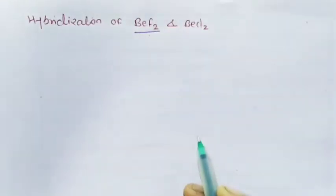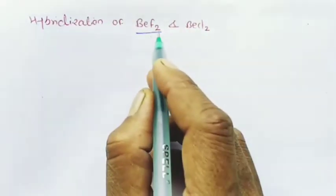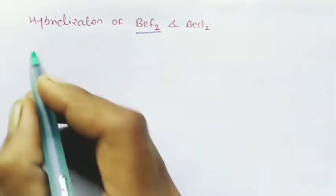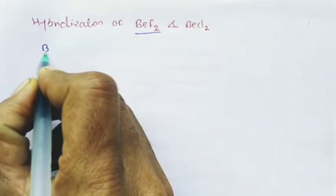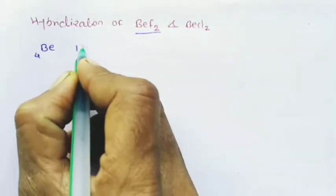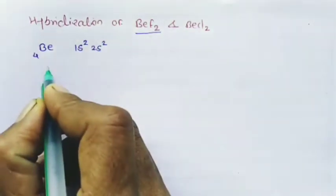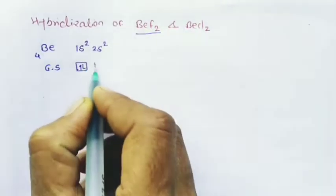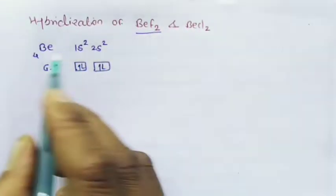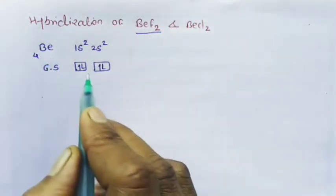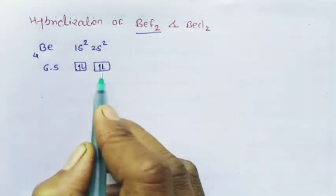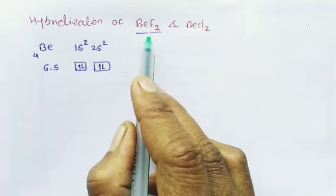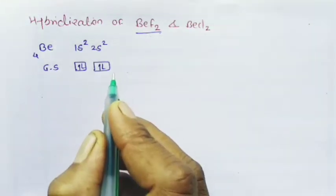We take first the BeF₂ molecule. In this BeF₂ molecule, 1 beryllium and 2 fluorine atoms are present. We write the electronic configuration of beryllium. Beryllium has atomic number 4, so its electronic configuration is 1s², 2s². In the ground state of beryllium, there are no unpaired electrons — absence of unpaired electrons. But the valence of beryllium is 2, meaning beryllium is divalent. Therefore, excitation occurs.